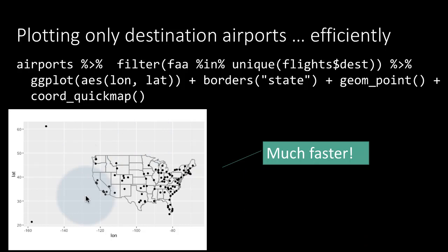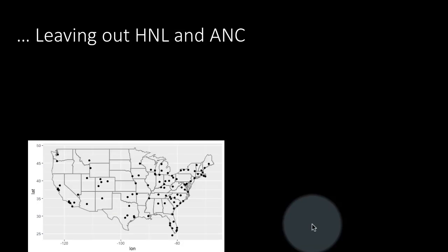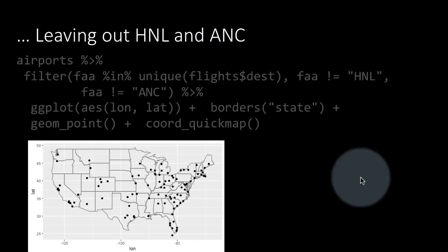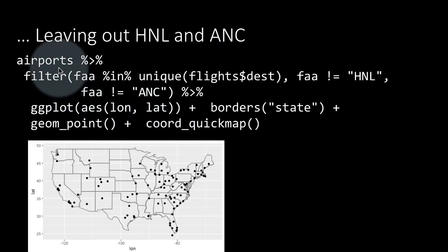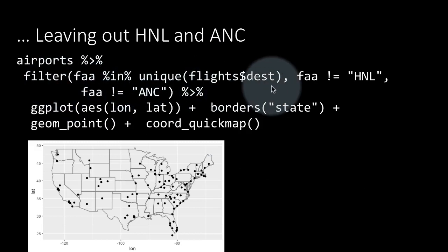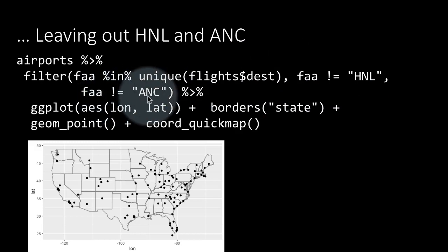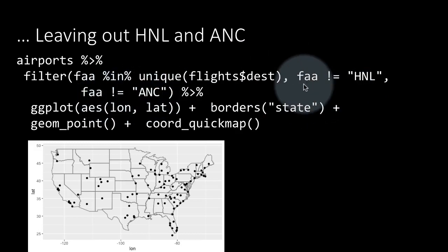Let's try to get the plot of only the mainland USA airports. So to do that, what we would want to do is to remove Anchorage and Hawaii. So HNL, which is Honolulu and Anchorage, we want to leave them out. So we do that by saying airports filter this and also faa not equal to HNL, faa not equal to ANC. That is Honolulu and Anchorage, we are leaving those as well.